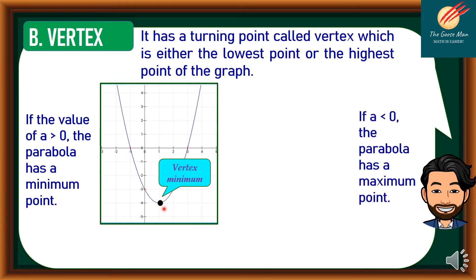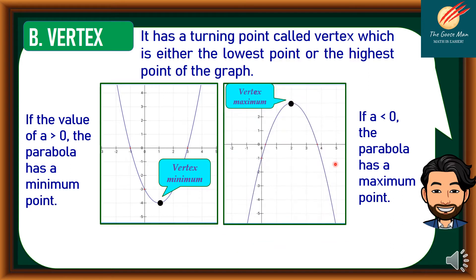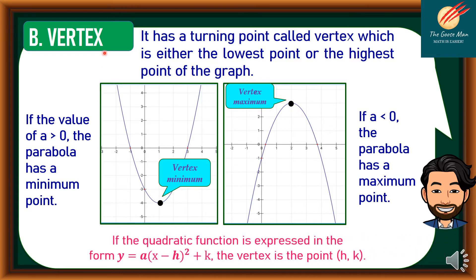On the other hand, if a is less than 0 or negative, the parabola has a maximum point. So in this illustration, this is the vertex, or the highest point — the maximum point.